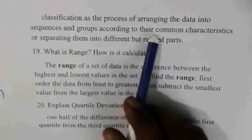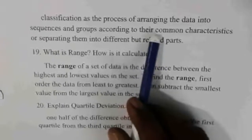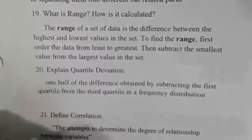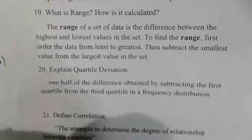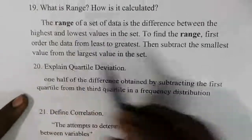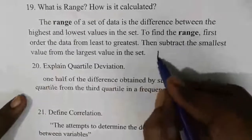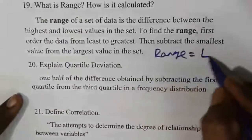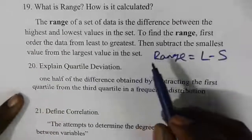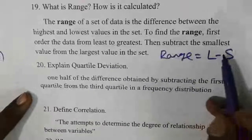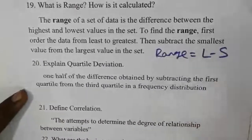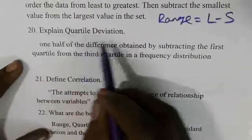Measures of dispersion: there are four types. Range is a measure of dispersion. Range is nothing but the largest value minus the smallest value. The coefficient of range is calculated as L minus S divided by L plus S.